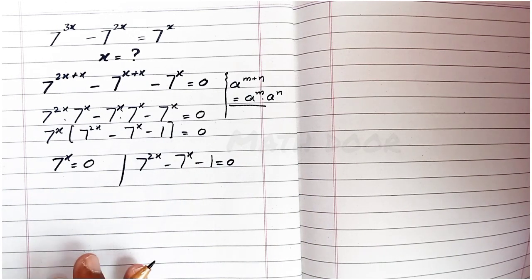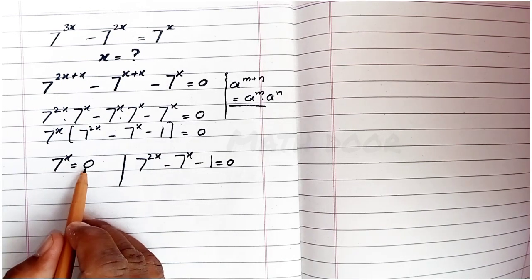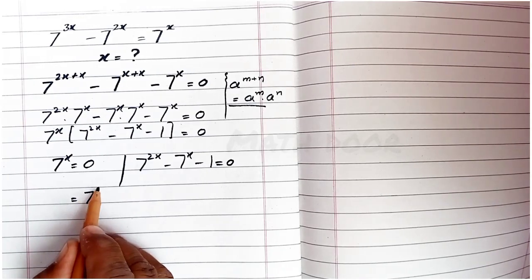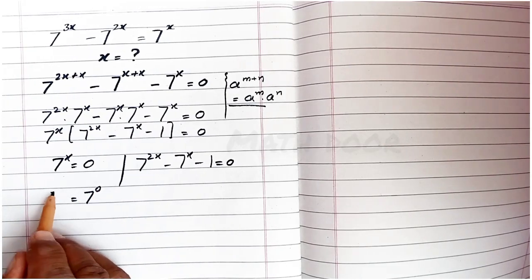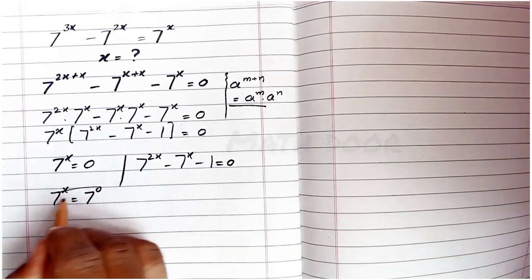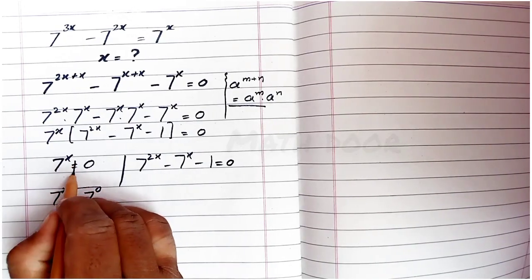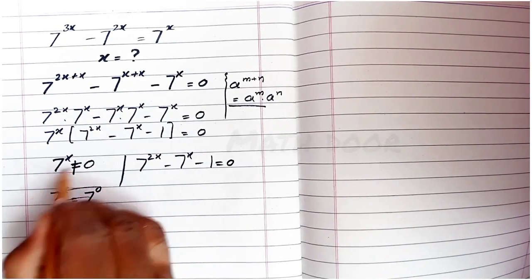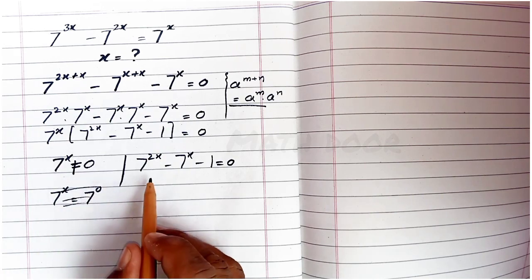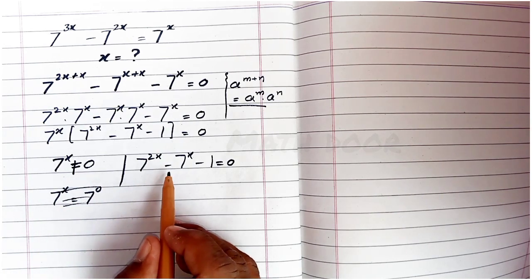For the case 7 power x equals 0: any number raised to a power of 0 equals 1, not 0, so this gives an undefined or impossible result. Therefore we discard this case and proceed to solve the second equation.